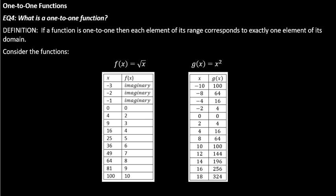Let's answer EQ4: what is a one-to-one function? Here's a definition — pause and write it down if needed. All it really is: every y value has to correspond to only one x value. For it to be one-to-one, every element of the range — every y value — has to correspond to exactly one element of its domain, in other words exactly one value of x.